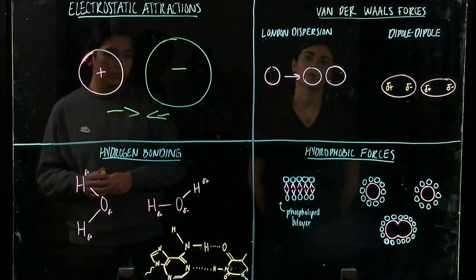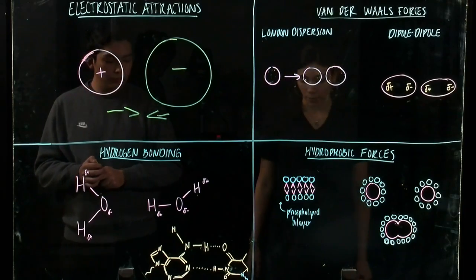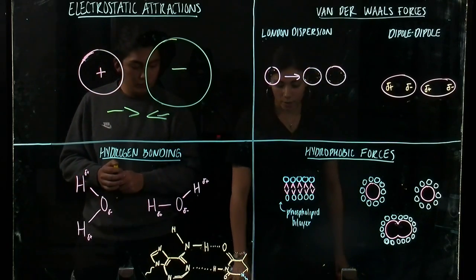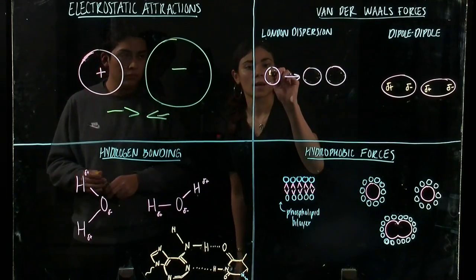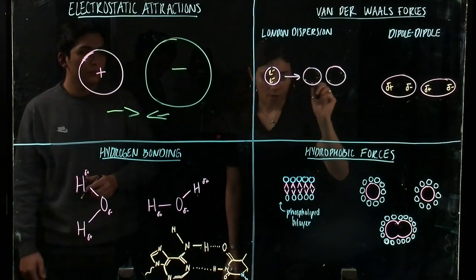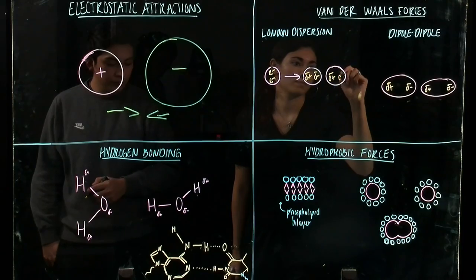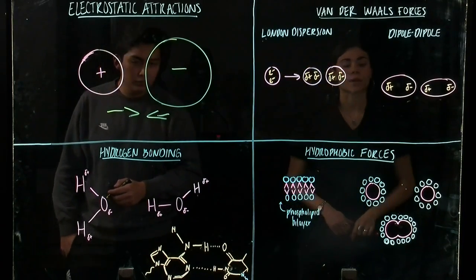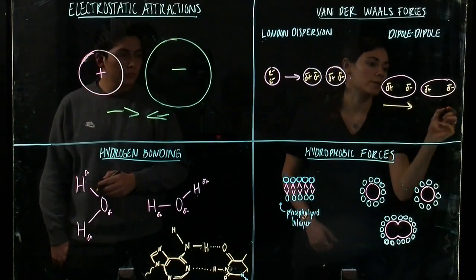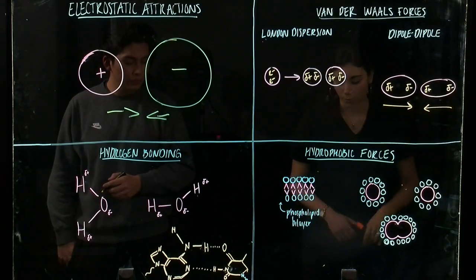There are two types of van der Waals forces: London dispersion and dipole-dipole. London dispersion forces are caused by the constant random motion of electrons and atoms that cause instantaneous dipoles. Dipole-dipole forces are caused when the slightly negative end of one molecule is attracted to the slightly positive end of another molecule.